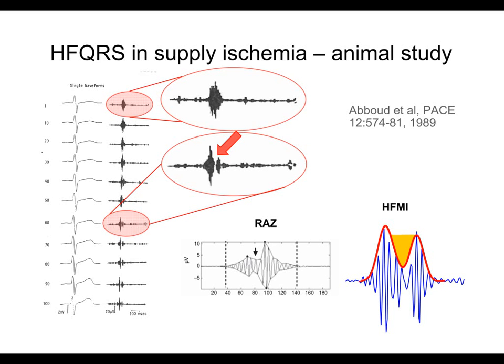The High Frequency Morphology Index estimates the extent of RAS by computing the relative area of the basin in the HFQRS envelope. On the right, the basin is marked in yellow, and the ratio of the yellow area divided by the area under the red envelope is the HFMI.